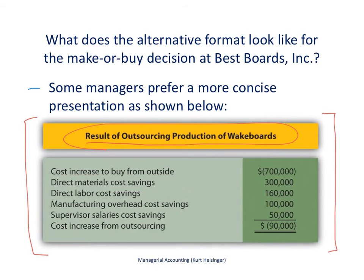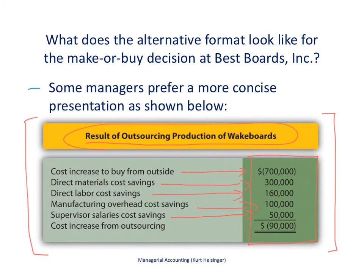The summary shows what will happen if we outsource. The costs will increase if we buy from the outside, but we'll have savings in direct materials, direct labor, and variable manufacturing overhead if we outsource, plus some cost savings in supervisor salaries. However, when you net all this out, we will have a cost increase if we choose to outsource, which is why the decision is to continue to produce internally.